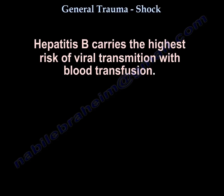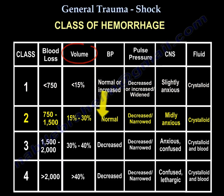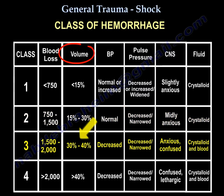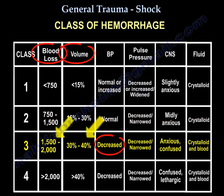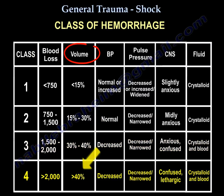Regarding hemorrhage classification: we have five liters of blood total. Class I is less than 15% loss. Class II is 15–30% loss, where pulse pressure starts getting narrower. Class III is 30–40% loss, about 1500 to 2000 mL, and that's when you get hypotension — you have to lose at least 30% of blood volume to get hypotension — along with tachycardia, decreased urine output, and anxiety or confusion. Class IV is more than 40% loss, and the patient will be confused and lethargic.